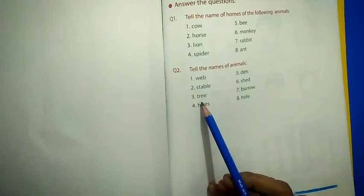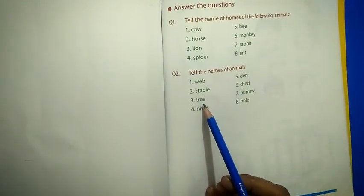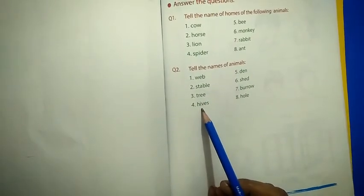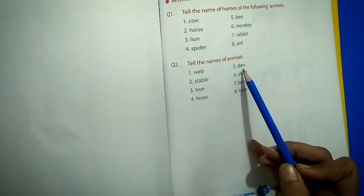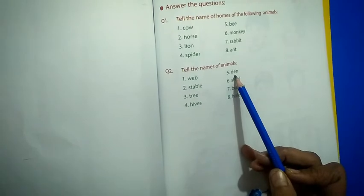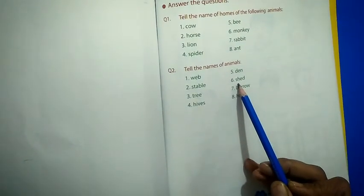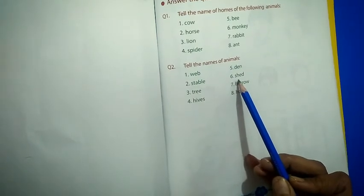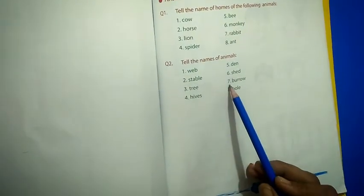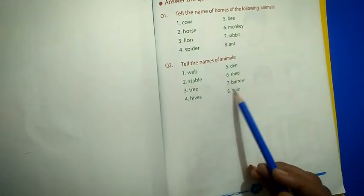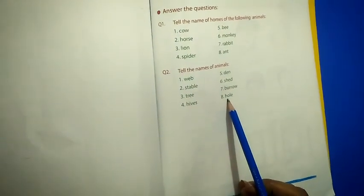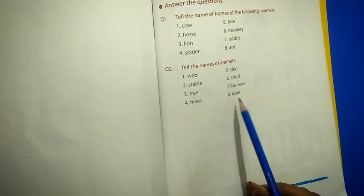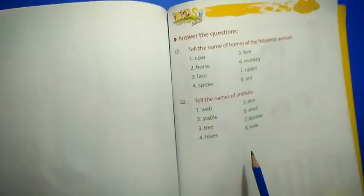Bee. Number 5: Den. Who, which animal lives in den? A lion. Lion. Good. Number 6: Shed. Who lives in a shed? Cow. Cow. Cow lives in a shed. Number 7: Burro. Burro. Who lives in a burro? Rabbit. Rabbit. Number 8: Hole. Who lives in a hole? Which animal? Ant. Ant. Ant lives in a hole. Thank you students.